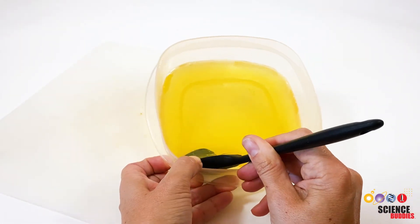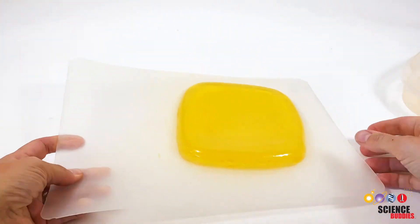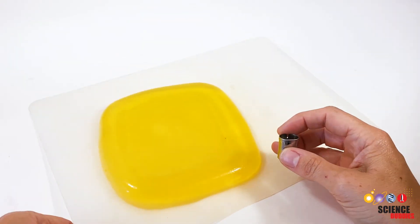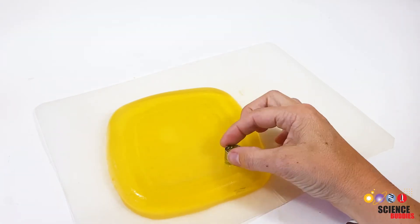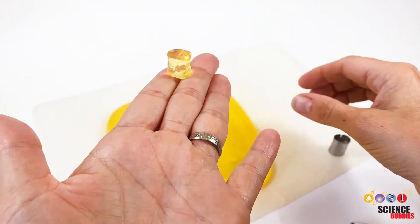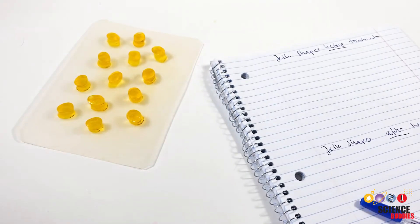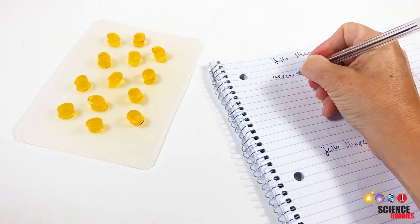When the jello is firm, prepare your jello or insulin shapes. Transfer both jello molds to a cutting board using a spatula. Then use the cookie cutter to cut 20 shapes out of the jello. These shapes will represent the insulin. Don't forget to take pictures of them and make notes of their appearance before continuing with the experiment.